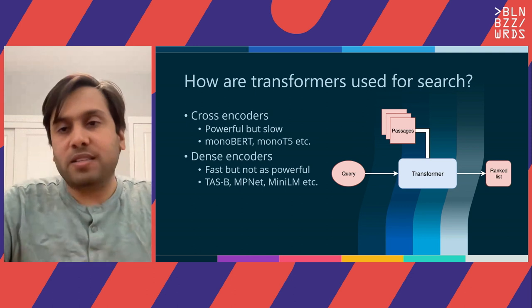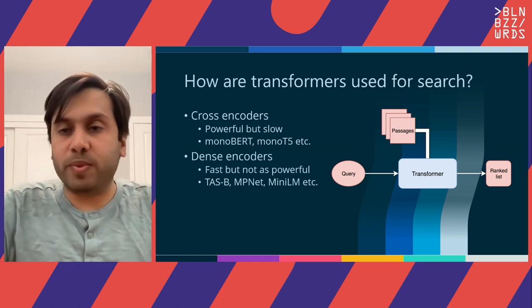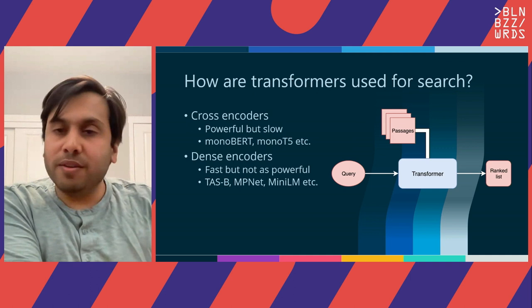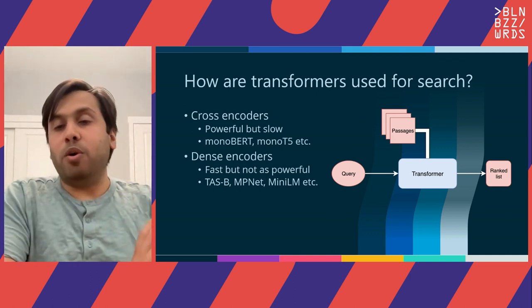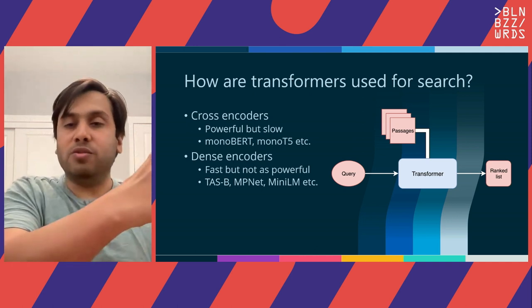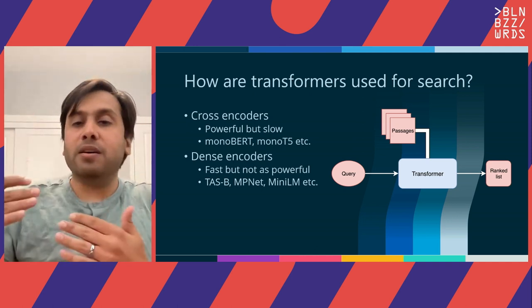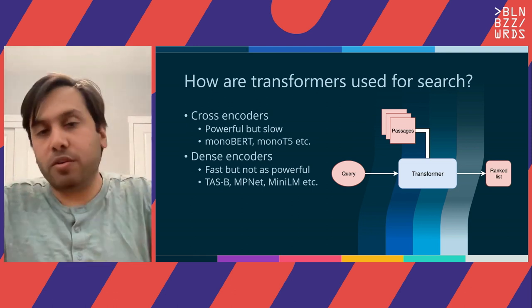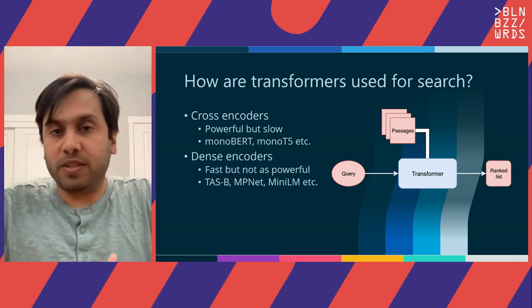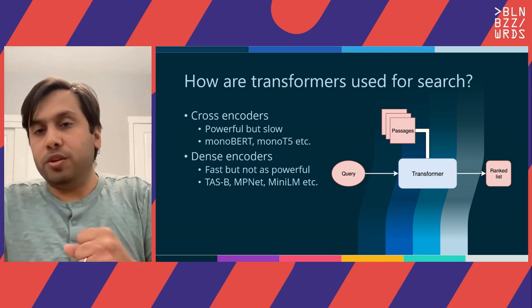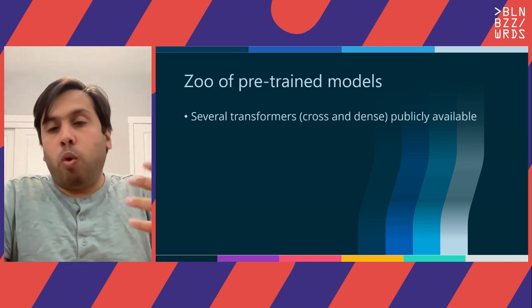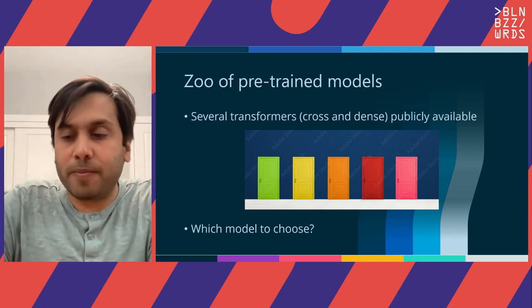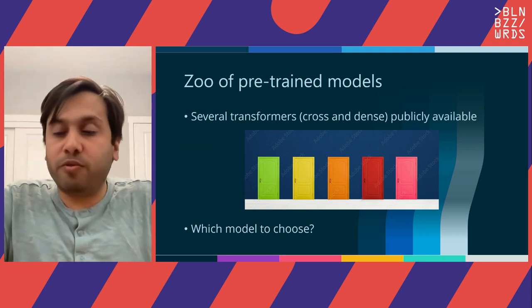The Transformer also has access to all the passages and documents present in your corpus — via a vectorDB, a first-stage retrieval system, or whatever. A query comes in, the Transformer has access to all the corpus, and the output is a list of ranked results. Based on your requirements you can decide whether you want cross encoders or dense encoders. But once you figure out what architecture to use, you are still left with the question: what model should I use? There are hundreds of cross encoder models and hundreds of dense encoder models, so how do we decide?